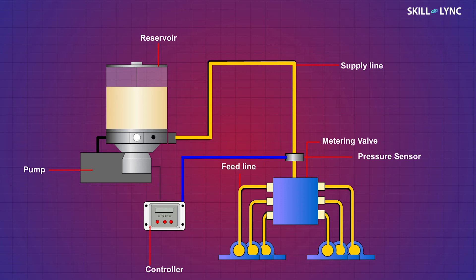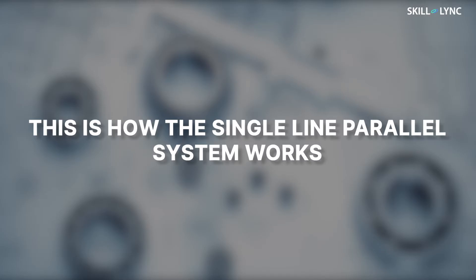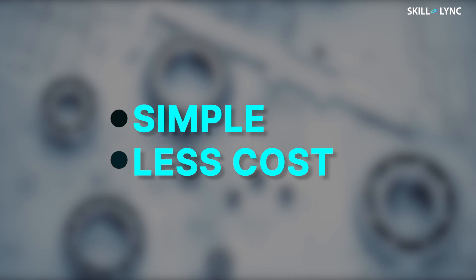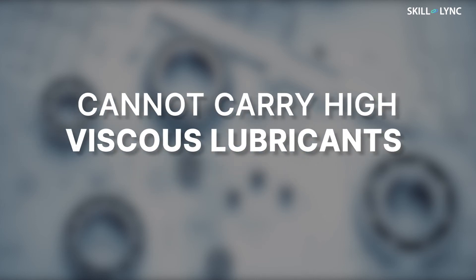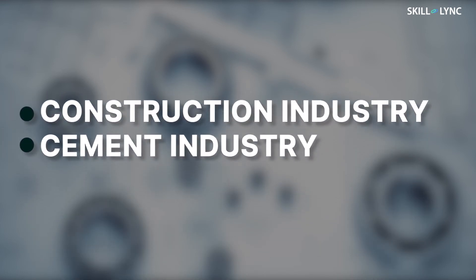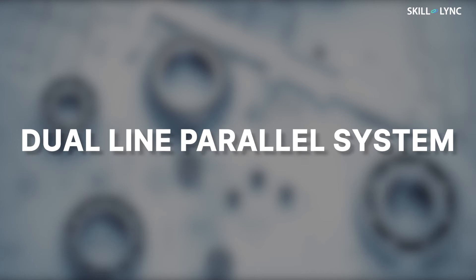The pressure in the lines will then get relieved. This is how the single line parallel system works. This system is simple and less costly, but it cannot carry high-viscous lubricants. This system is used in machineries in the construction and cement industries. The next type is the dual line parallel system.